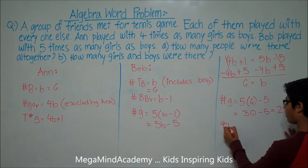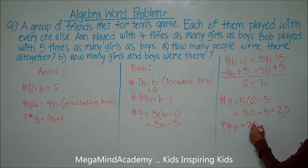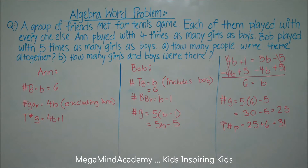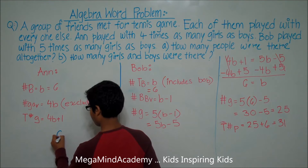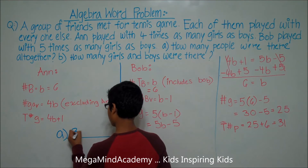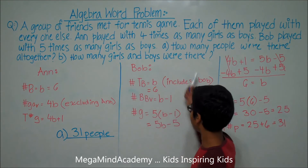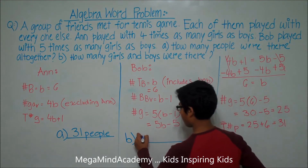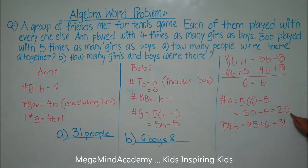The total number of people is equal to twenty-five, which is the number of girls, plus six, which is the number of boys. This is equal to thirty-one. So there are a total of thirty-one people altogether. The answer to question A — how many people were there — is thirty-one people. The answer to question B — how many girls and boys were there — is six boys and twenty-five girls.